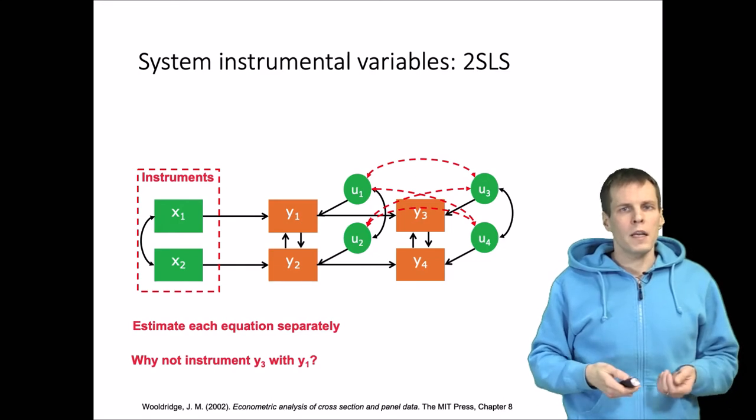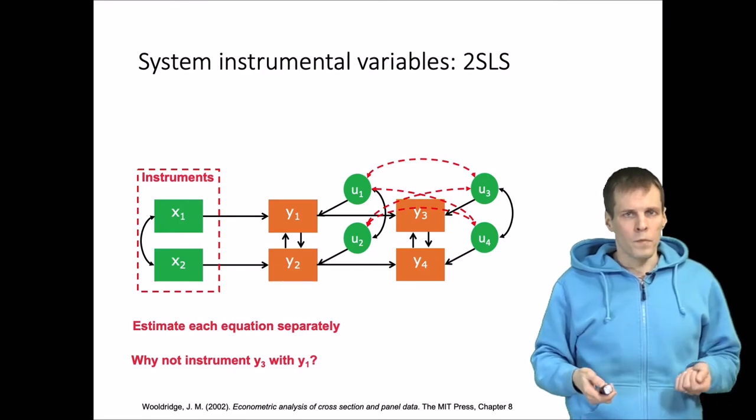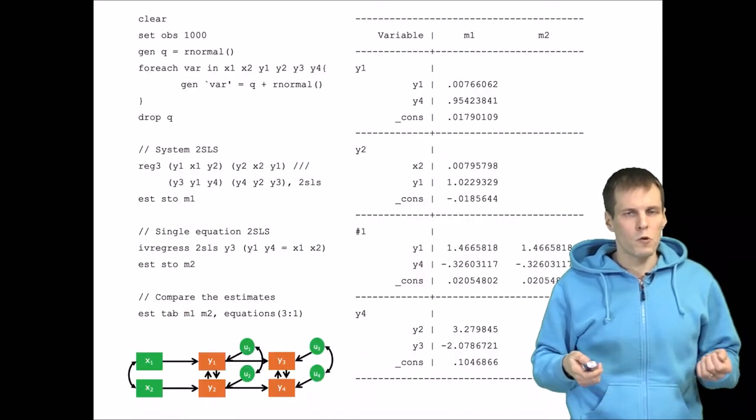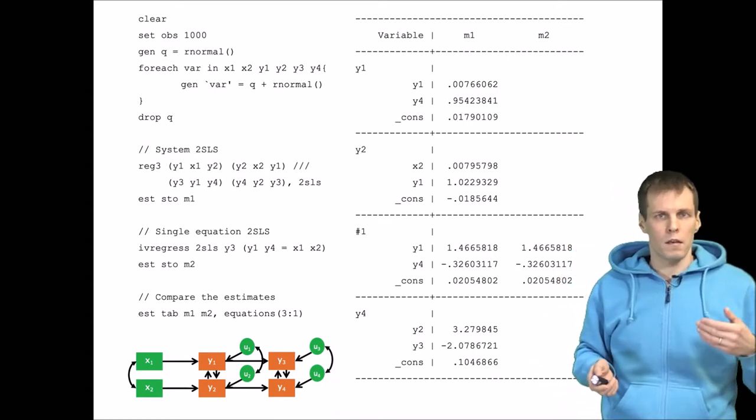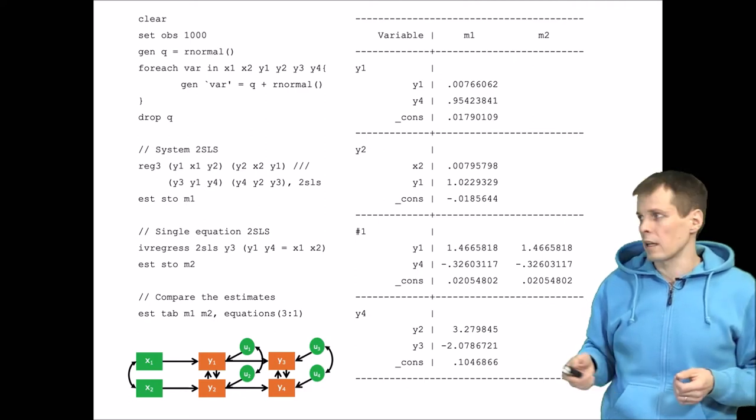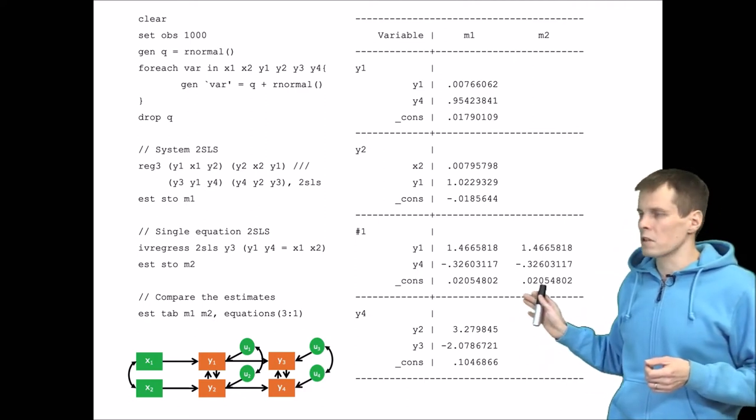Estimating a model using the system-wide two-stage least squares is, as I said, equivalent to running two-stage least squares for each model separately, and here's a small demonstration using Stata.